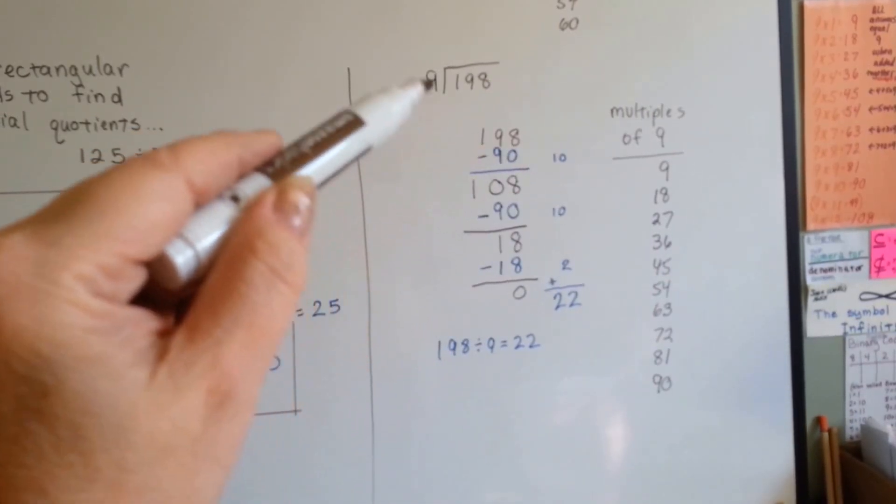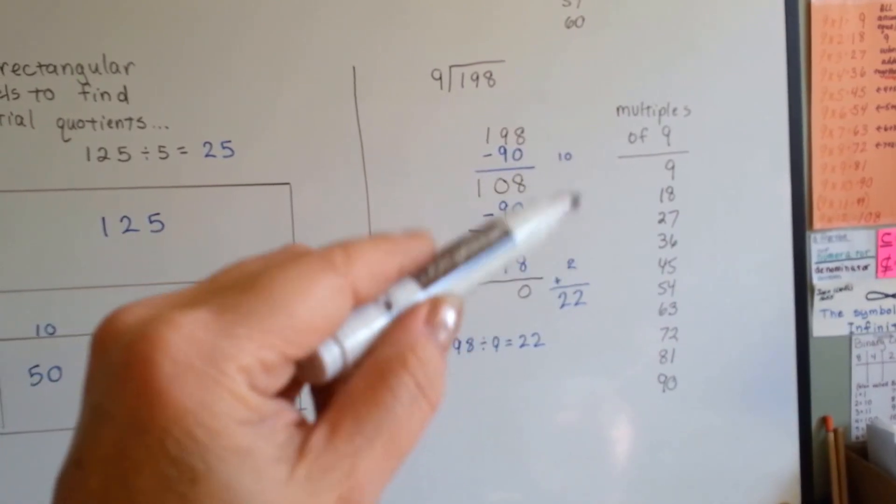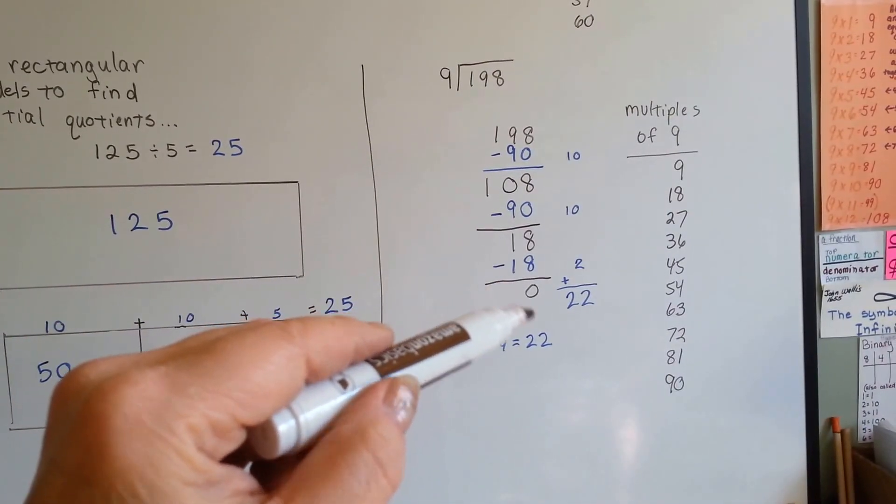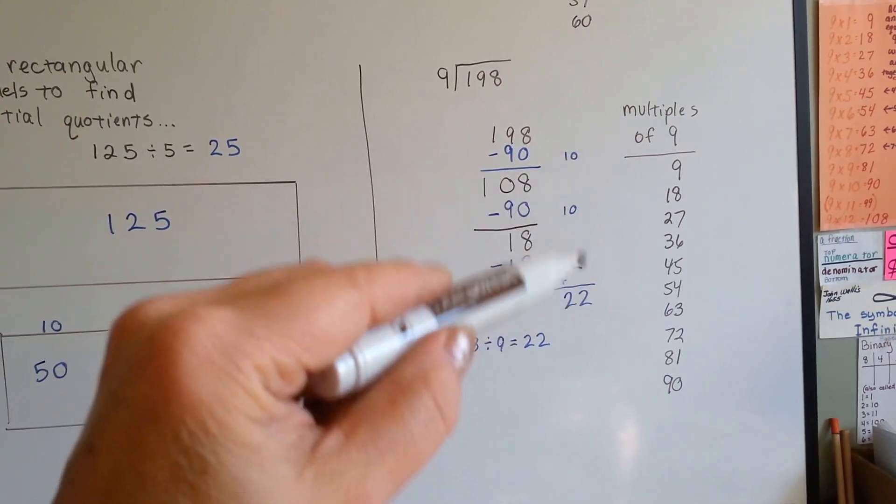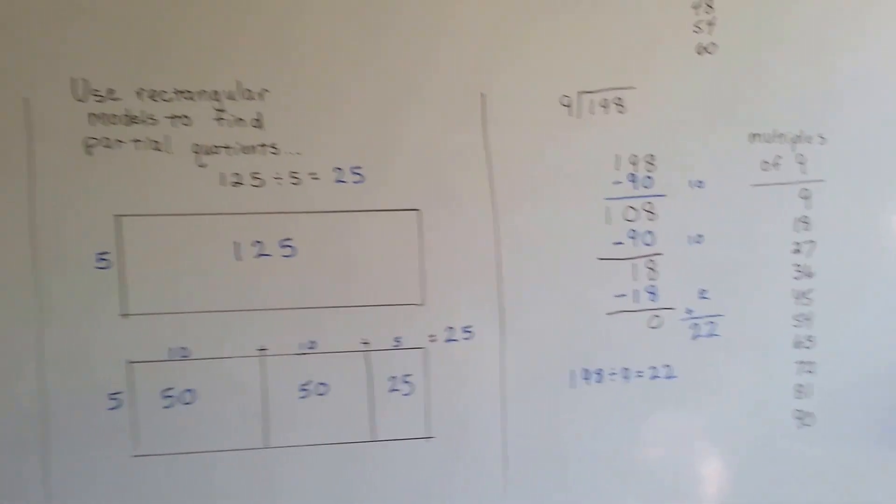What you're multiplying the multiple by, 9 times 10 is 90. So, make sure you put them over here. Then after you've gotten down to 0, you add up these, your counting numbers, and that's how much the quotient is.